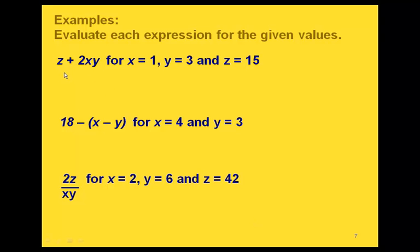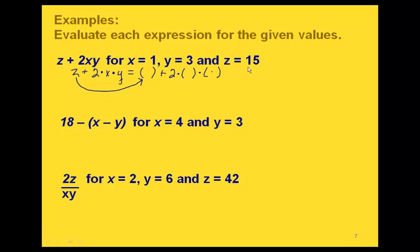Some expressions have more than two variables — we can use as many as needed. Here we have z plus 2 times x times y, with three variables. We place parentheses for z, x, and y, then fill in: z equals 15, x equals 1, y equals 3. So we get 15 plus 2 times 1 times 3.